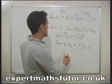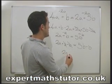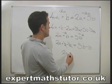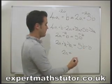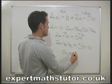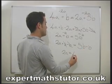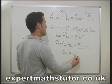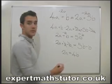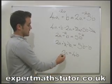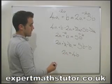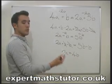Let's write that out a bit neater. 2a equals 5b minus b, which is 4b. So 2a equals 4b.